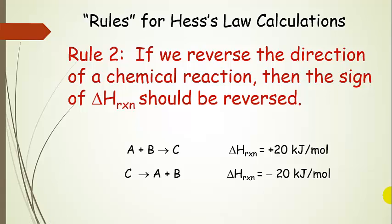We've seen an example of this already, but here is the specific rule: if we reverse the direction of a chemical reaction, then the sign of delta H reaction should be reversed. Here we have A plus B going to C with a certain delta H reaction, and now we're just reversing it, so we end up with the opposite sign: negative 20 kilojoules per mole.